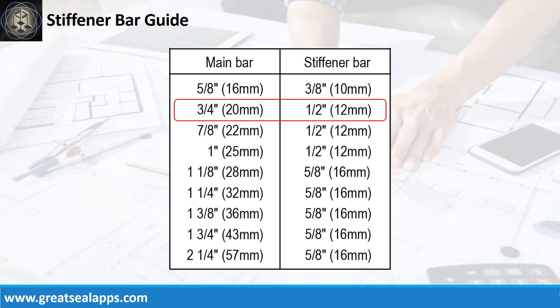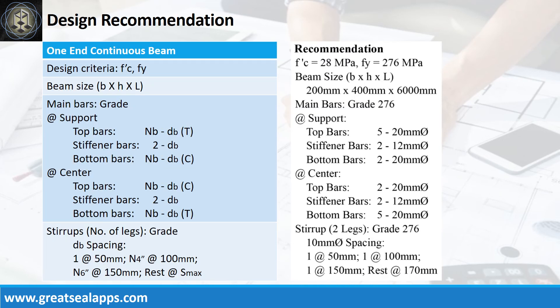For 20 mm main bars, use 12 mm stiffener bars. Design recommendations: f'c equals 28 MPa, fy equals 276 MPa, beam size is 200 mm by 400 mm by 6000 mm, main bars grade 276. At support: top bars — 5 pieces 20 mm bar; stiffener bars — 2 pieces 12 mm bar; bottom bars — 2 pieces 20 mm bar. At center: top bars — 2 pieces 20 mm bar; stiffener bars — 2 pieces 12 mm bar; bottom bars — 5 pieces 20 mm bar. Stirrups: 2 legs, grade 276, 10 mm bar — one at 50 mm, one at 100 mm, one at 150 mm, rest at 170 mm.